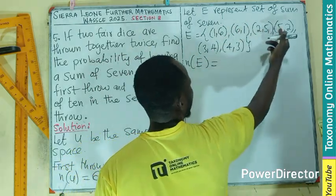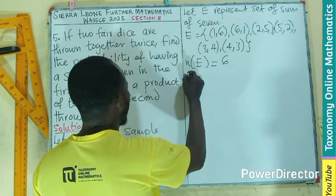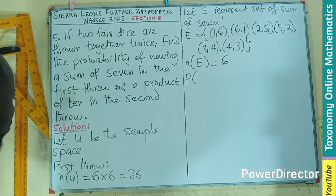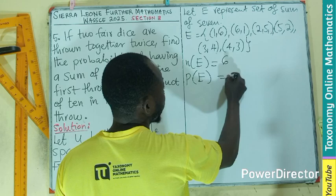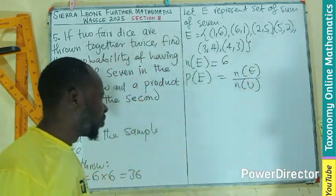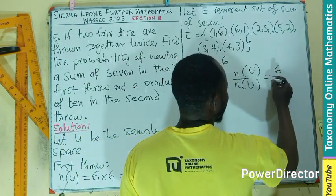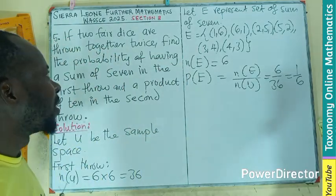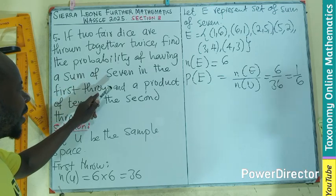Number of E here, one, two, three, four, five, six. I have six in here. So therefore the probability of E equals to number of E over number of sample space, and we have our E here to be 6 over 36, which is 1 over 6, as simple as that.